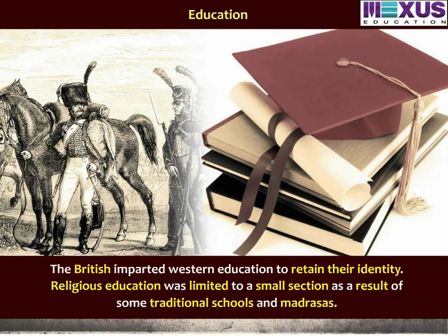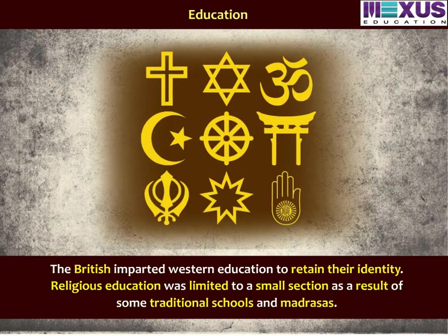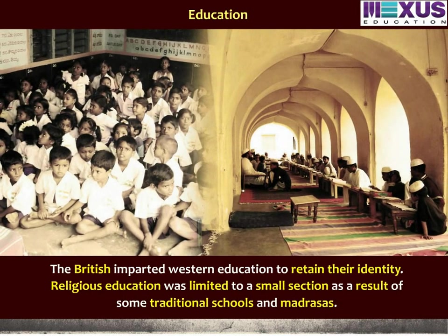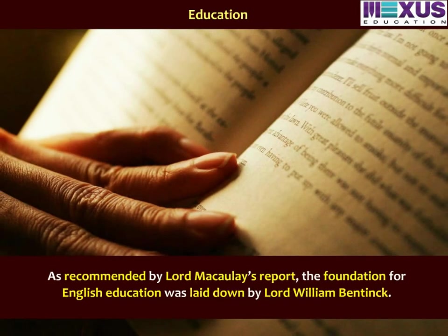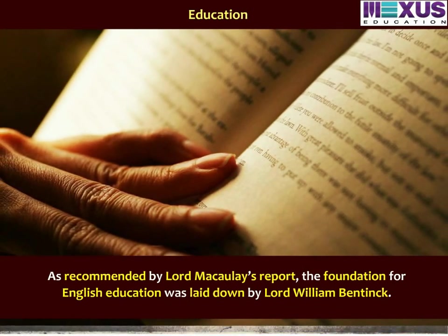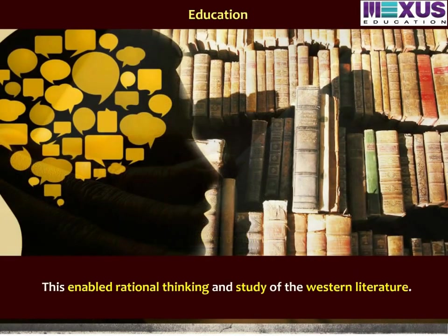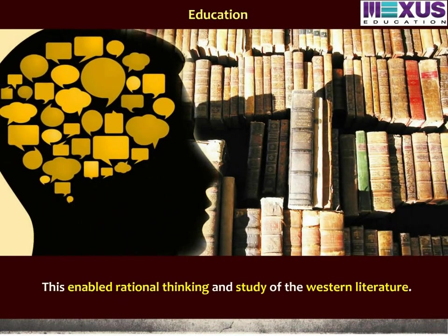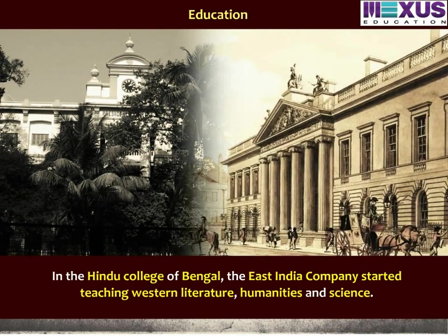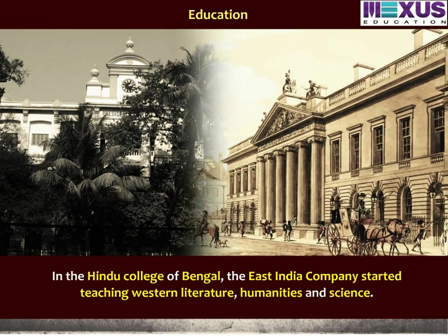The British imparted Western education to retain their identity. Religious education was limited to a small section as a result of some traditional schools and madrasas. As recommended by Lord Macaulay's report, the foundation for English education was laid down by Lord William Bentinck. This enabled rational thinking and study of Western literature. In the Hindu College of Bengal, the East India Company started teaching Western literature, humanities, and science.